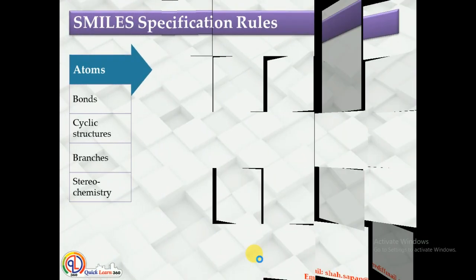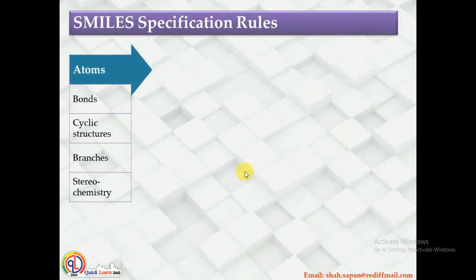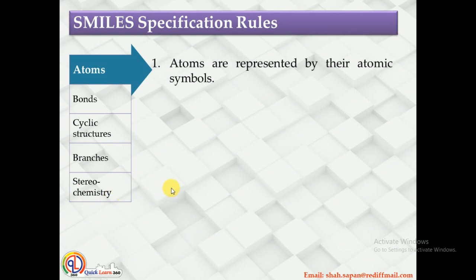To understand the SMILES notation, we first need to understand the SMILES specification rules. These rules will help you represent atoms, bonds, cyclic structures, branches, and also the stereochemistry of any chemical structure.